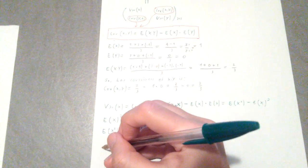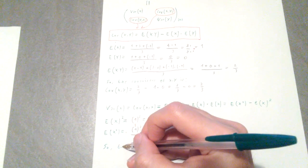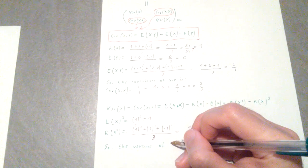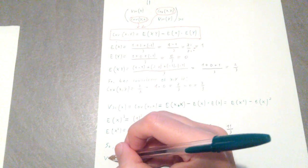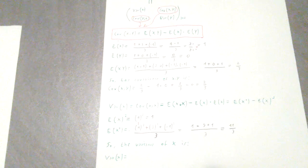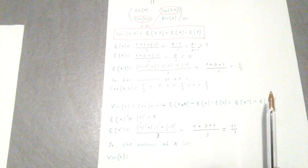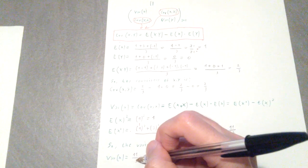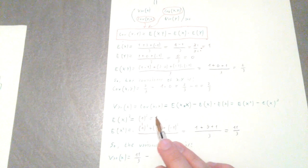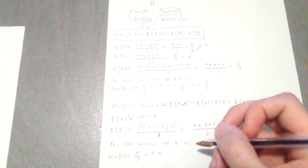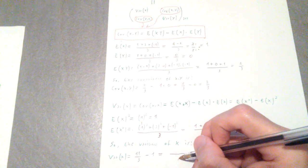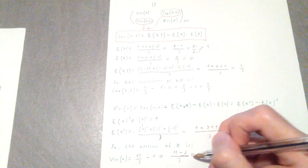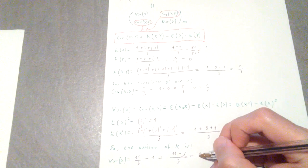So the variance of x is E[x²] minus (E[x])² = 11/3 minus 1 = 11/3 minus 3/3 = 8/3. Now all that's left is to find the variance of y, and then we can finally populate our matrix. Let's do this.